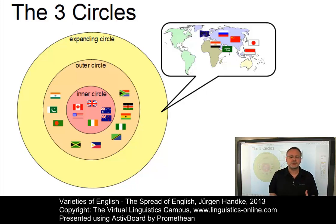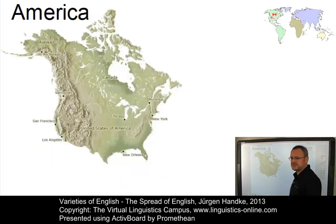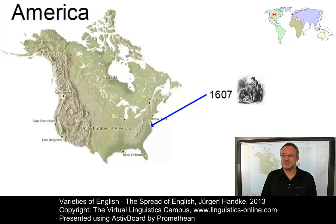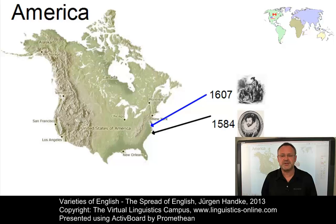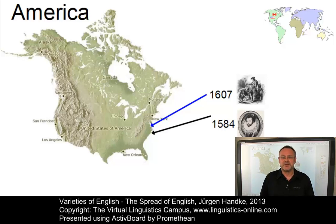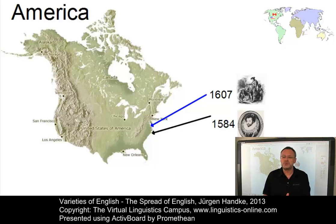Let us take a brief look at the inner circle development now and let's start with North America. The first permanent settlement in North America began with the arrival of England's second expedition in 1607. The first, by Sir Walter Raleigh and his fellow explorers who arrived in 1584, had been forced to return to England as a consequence of conflicts with the native people. The new southern colonists came mainly from England's west country. Their tidewater accents still exist in some isolated valleys and are said to be the closest to the sound of Shakespeare's English, that is early modern English.